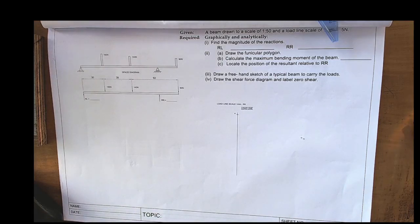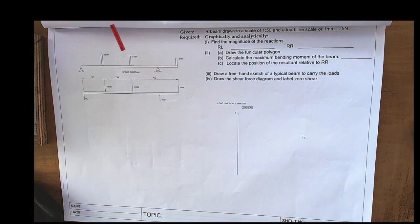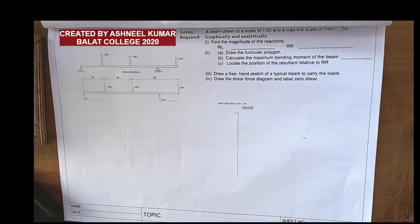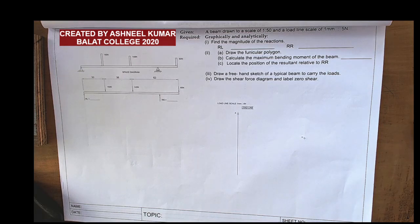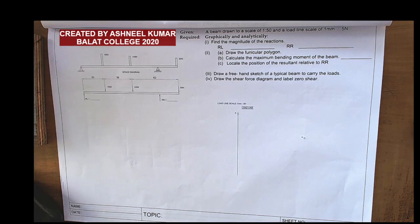This is exercise three of beams from the TD workbooks year 12. A beam is drawn to a scale of 1:250 as the space diagram scale, and the load line scale is 1 mm to 5 newtons. The questions are to find the magnitude of RL and RR, the funicular polygon, the maximum bending moment position, the resultant of RR, the position of the resultant relative to RR, a free sketch of the typical beam, and also the shear force diagram.